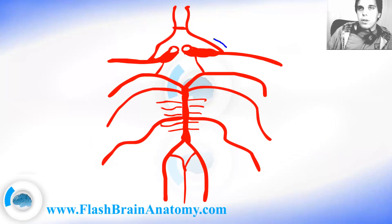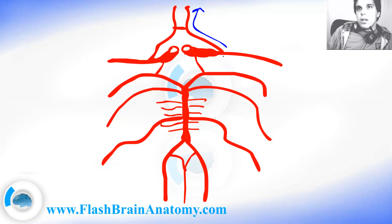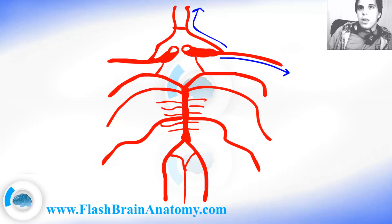So, the anterior cerebral arteries supply pretty much the anterior and superior surface of the medial side of the brain. Then we have the middle cerebral artery which supplies the insula and pretty much the lateral side of the brain. And we had one very important artery — the posterior cerebral artery — and it supplies the posterior medial side of the brain.